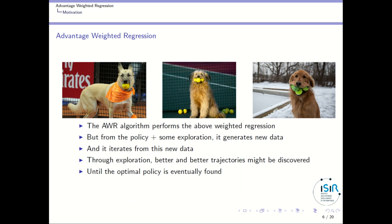The advantage weighted regression algorithm does exactly this: it performs a weighted regression from an initial policy, which is generally random, to get a policy better than the random samples it observed. From that policy plus some exploration, it generates new data and iterates again. It may get a second policy better than the previous one, then generates new data from this better policy plus some exploration, and so on. Little by little the policy should improve to something very efficient.